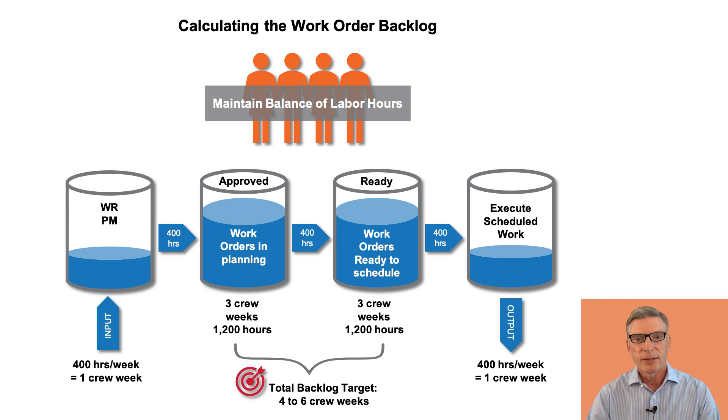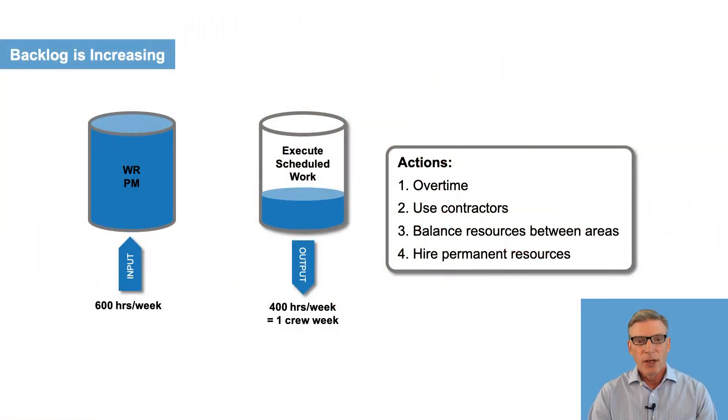Best practice is to have around four to six weeks of work, depending on the industry, mostly process industry. Some of the issues we run into is that screening approval or work requests require you to make a guesstimate of time before the planning of the work order. That usually is a pretty rough estimate, but it requires you to have some idea what's going on in your backlog. If you don't estimate the time, you're not going to have a good idea what your real backlog size is.